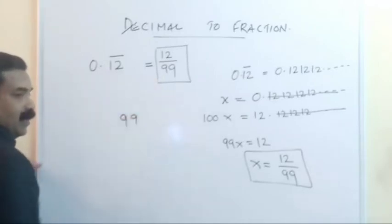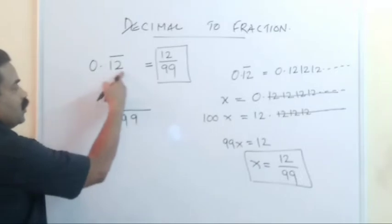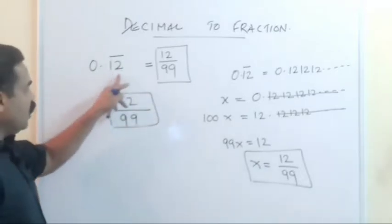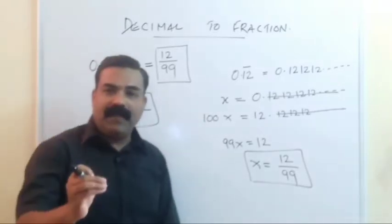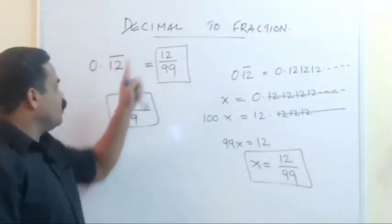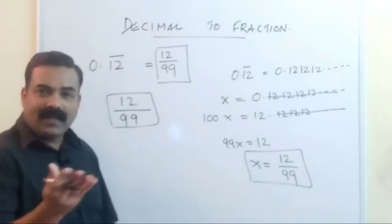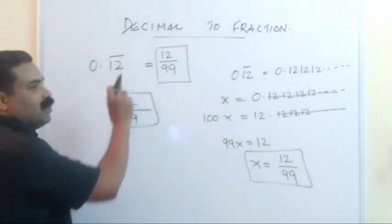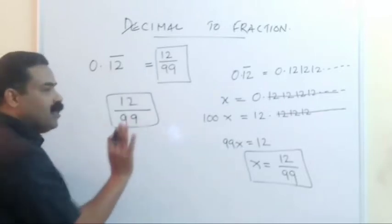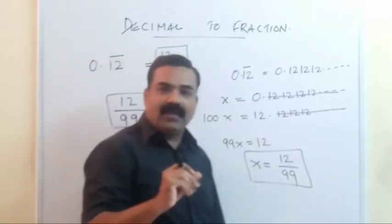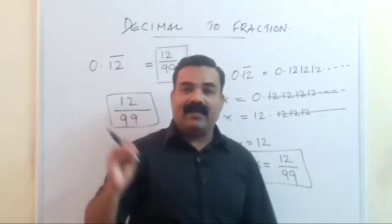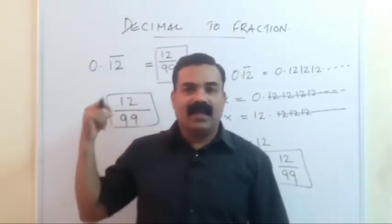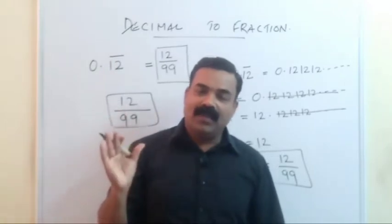The shortcut: the two repeating digits 1 and 2 go on top as 12. To get the denominator, count the repeating digits — two digits repeating means put 99. If only one digit is repeating, put 9; three digits repeating, put 999; four digits, put 9999; and so on. Here two digits repeat, so denominator is 99.